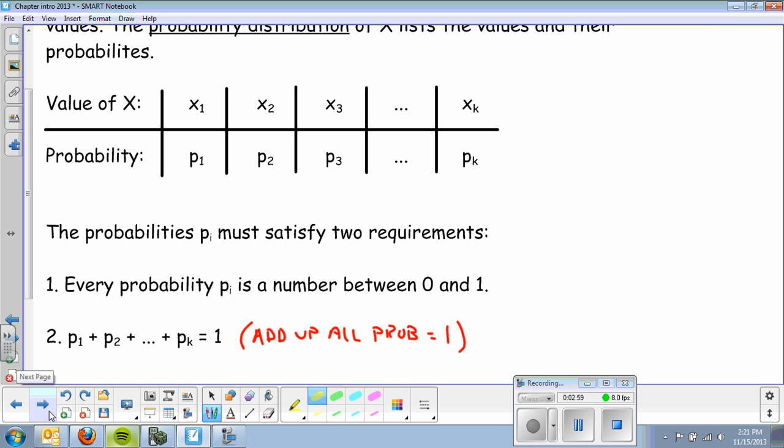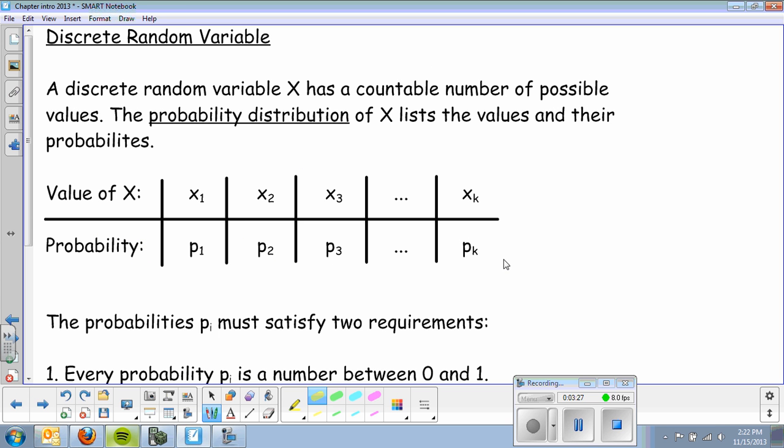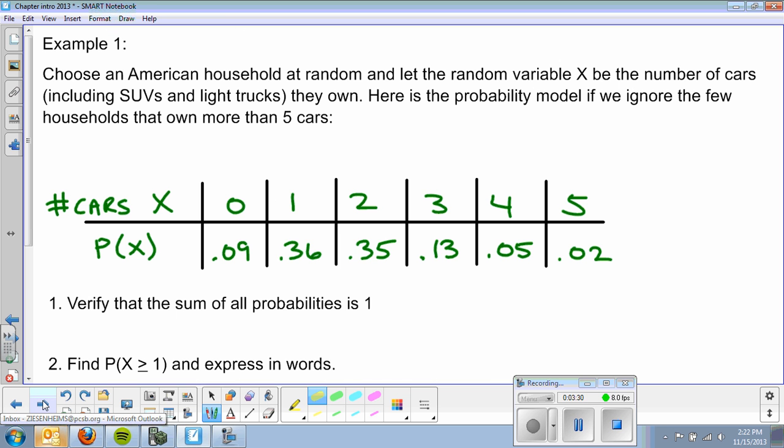Okay, so we'll walk through one example. So, let's say that I choose an American household at random, and let the random variable X be the number of cars, including SUVs and light trucks, that they own. So, we'll just kind of group all vehicles into that category. Here's the probability model. And we'll ignore the few households that own more than five cars. So, again, this is the same as this. It just has numbers in it, which makes it a lot easier to understand.